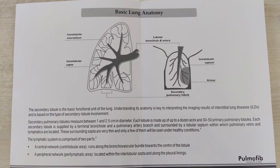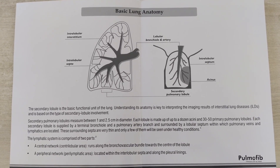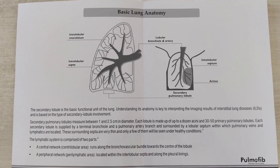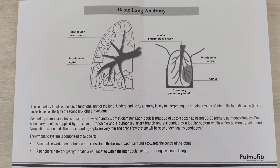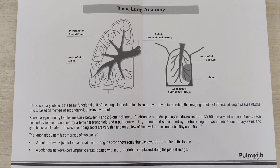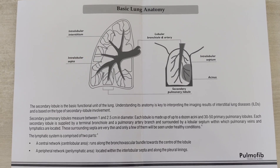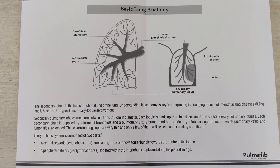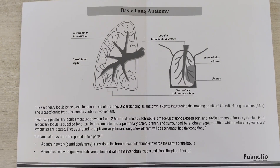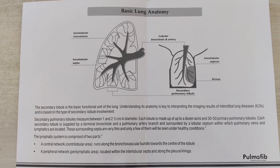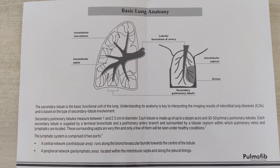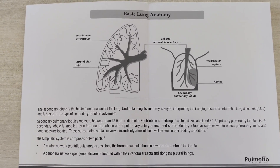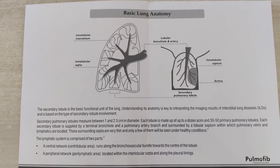The lymphatic system is comprised of two parts: central and peripheral. The central network, in the centrilobular area, runs along the bronchovascular bundle towards the centre of the lobule. The peripheral network, in the perilymphatic area, is located within the interlobular septa and along the pleural linings.